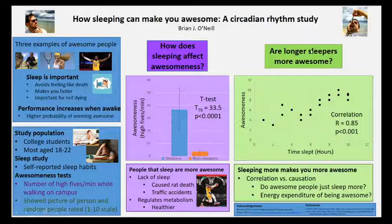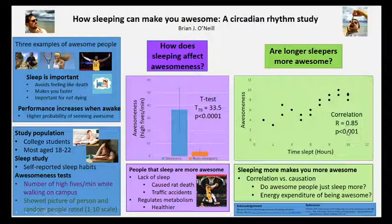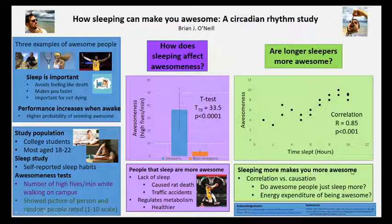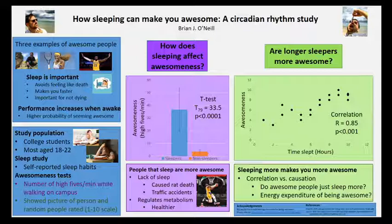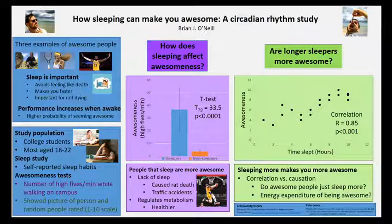The other result looks at how much total sleep a person got and how awesome they were, using a correlation with an r-value and p-value. The main point is that sleeping more makes you more awesome, but in the discussion we can point out issues — are you more awesome because you slept more, or do more awesome people just sleep more? And we could offer a biological answer: maybe it's really energy-expensive to be awesome, so you have to sleep more.